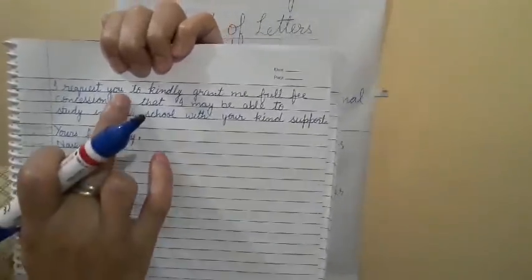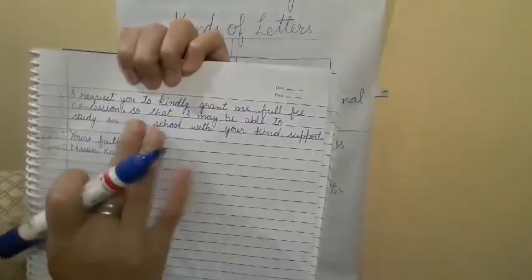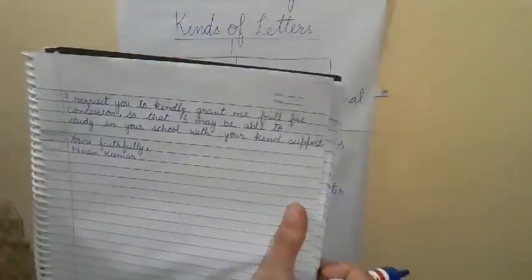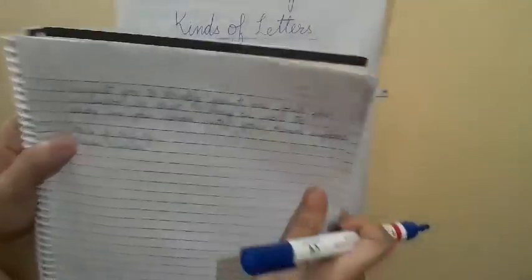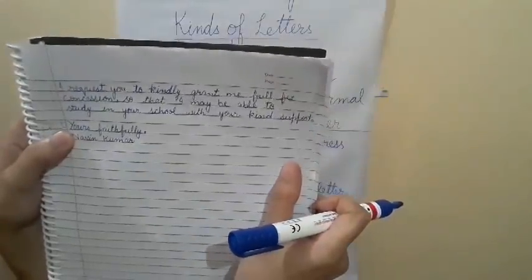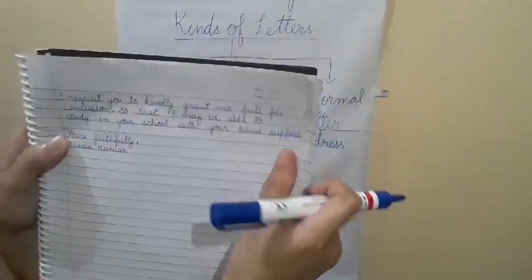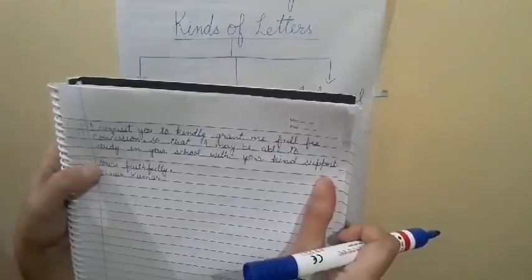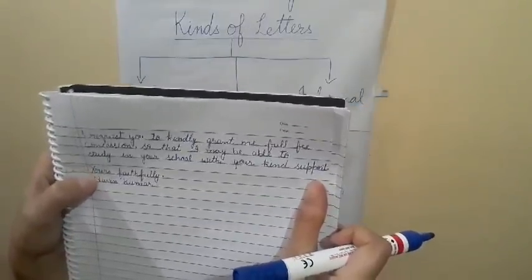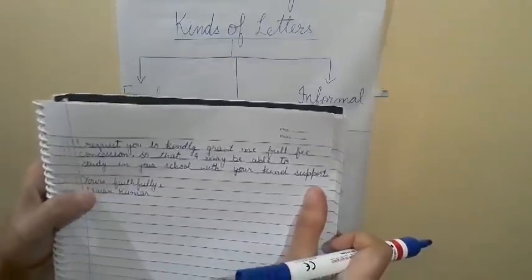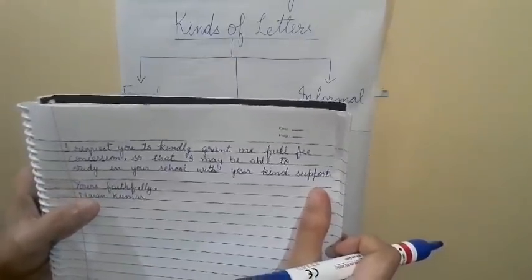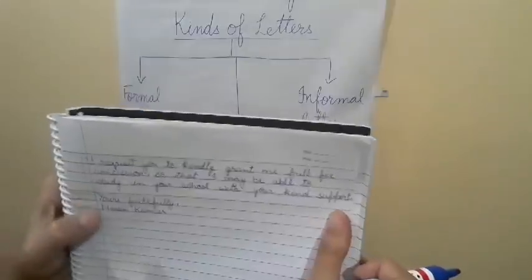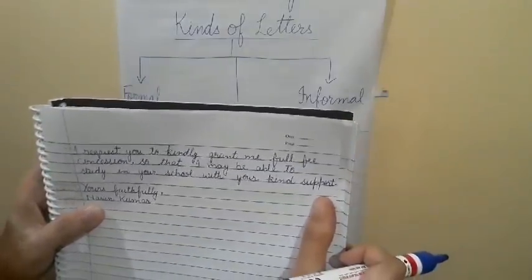After finishing the body of the letter, we leave one line and then write 'Yours faithfully'. In formal letters we use 'faithfully' or 'truly' — generally 'faithfully' is most suitable. After 'Yours faithfully' we put a comma, and without leaving any line we write the full name. 'Yours faithfully' is called the subscription, and the name written after it is called the signature.